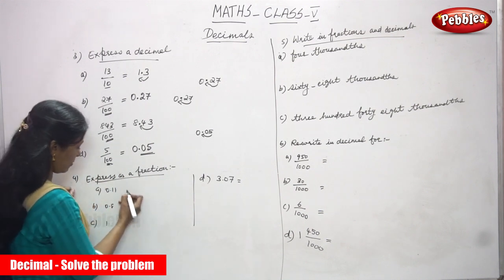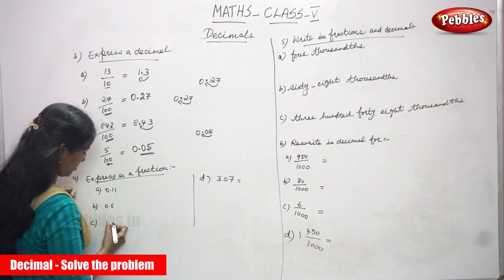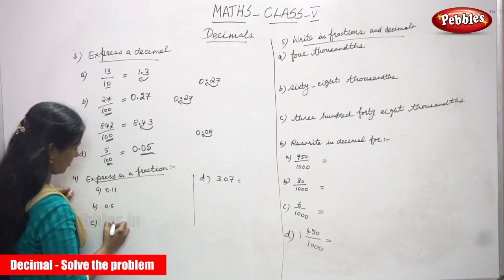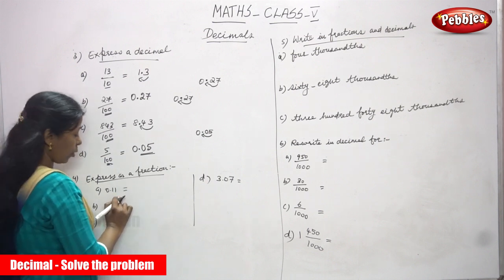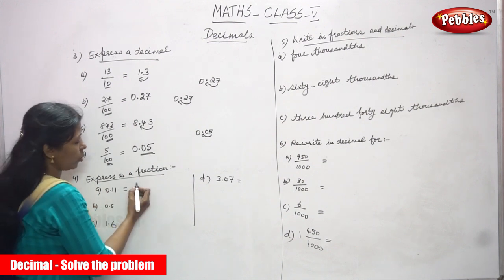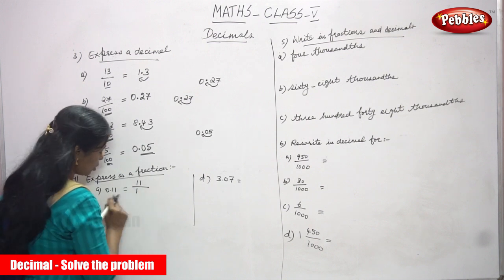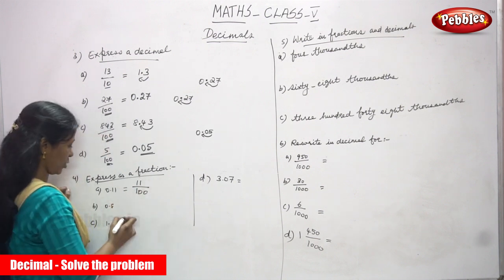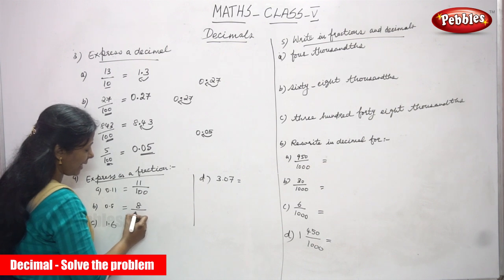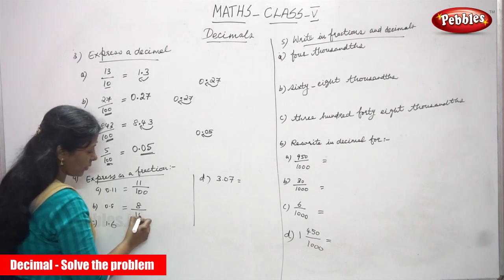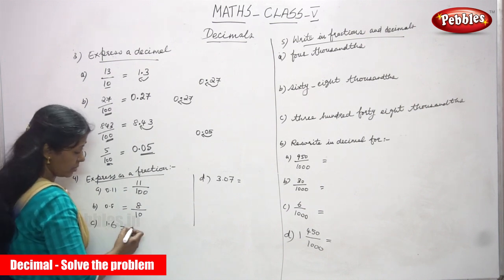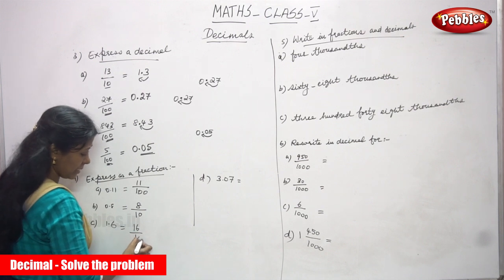Now express as a fraction. For 0.11: after the point there are 2 digits, so 11 is the numerator and you write 100 as the denominator — 11 by 100. For 0.8: after the point only 1 digit, so write 8 as the numerator and 10 as the denominator — 8 by 10.